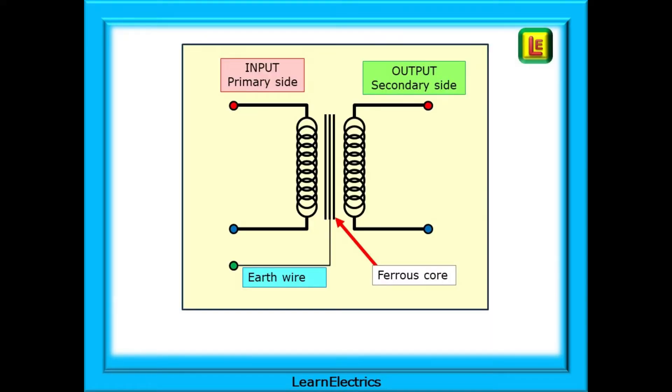A reminder of what a basic transformer is. There is an input or primary side and an output or secondary side. Most of the weight in a transformer is the ferrous core around which the primary and secondary coils or windings are arranged.